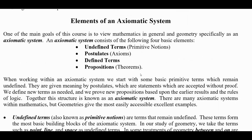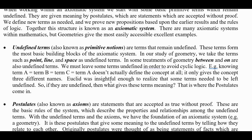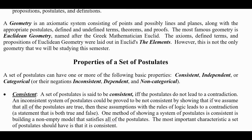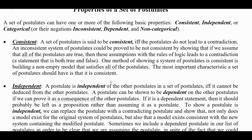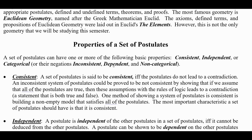To review: we talked about the four elements of an axiomatic system — undefined terms, postulates, defined terms, and propositions — and what each one is. Then we talked about the three properties a set of postulates might have: consistent, independent, and categorical. In particular, we want it to be consistent; it may or may not be independent or categorical. We'll proceed with the next video — see you then.